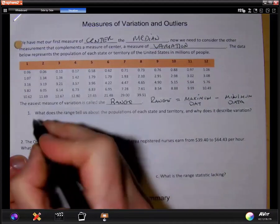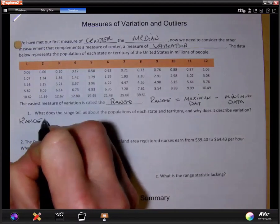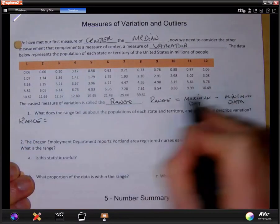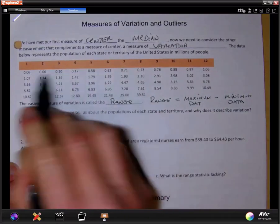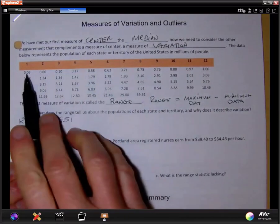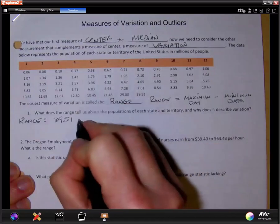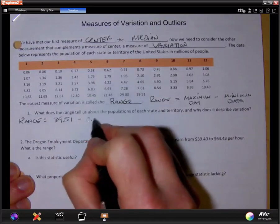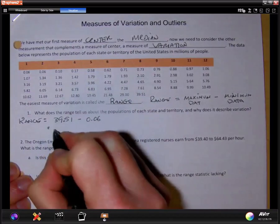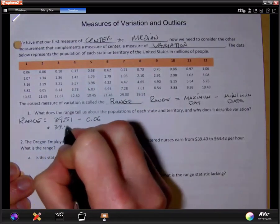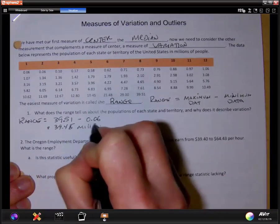Let's look at this data set here. What is the range of this data set? I have my maximum, which is 39.51. And notice this data is already in order. It's from smallest, and I keep going across to get to the highest, 0.06. And that gives me a range of 39.45 million people.